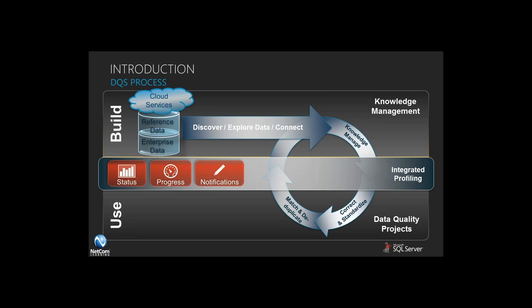When we think about data quality as a process within the Microsoft world, we need to understand what's actually happened behind the scenes. We start off with our core data — whether it's on our servers, whether we have some data in the cloud, whether all of our reference information is from our own data, or we have external data that we're using for reference. You have a whole series of different resources available to you. The knowledge management aspect is the collecting of that data from all of its different sources into a single knowledge base.